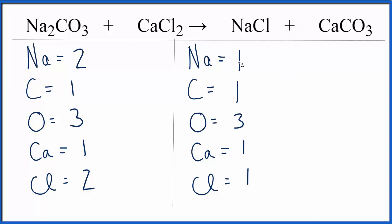We can see that we have twice as many sodiums and twice as many chlorines on the reactant side. So we can put a coefficient of two in front of the NaCl.